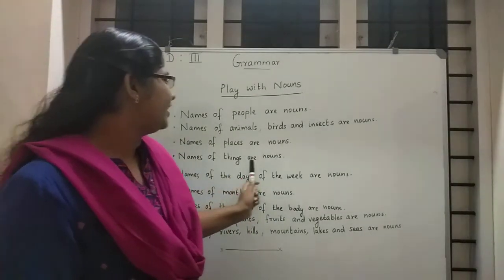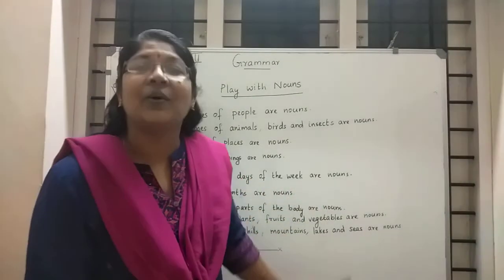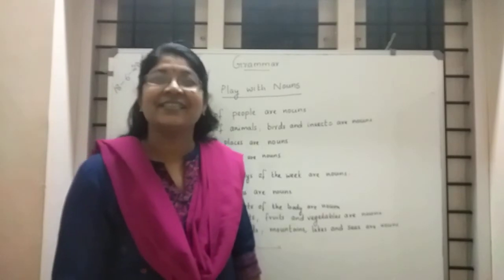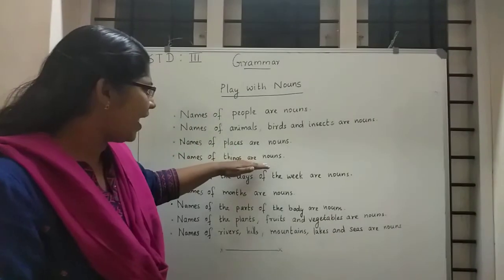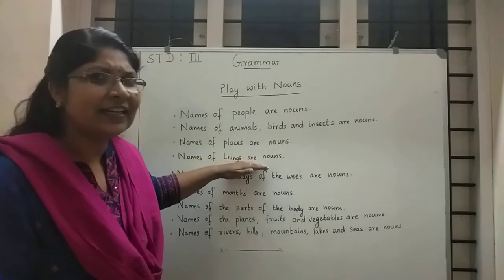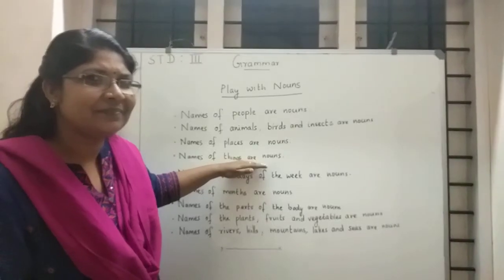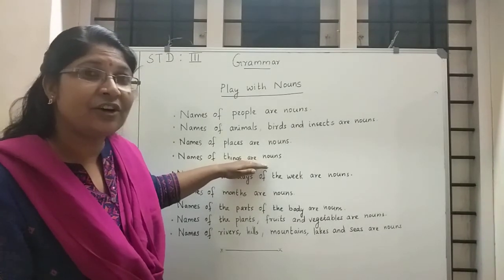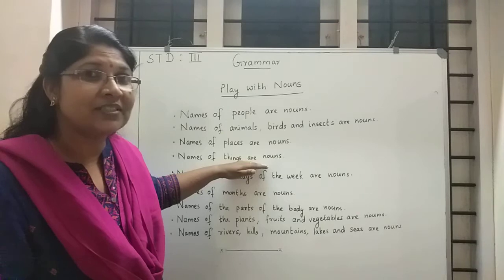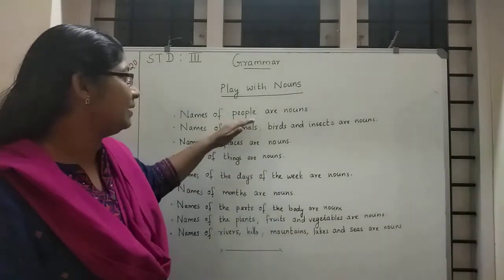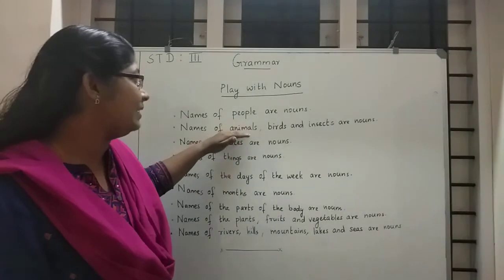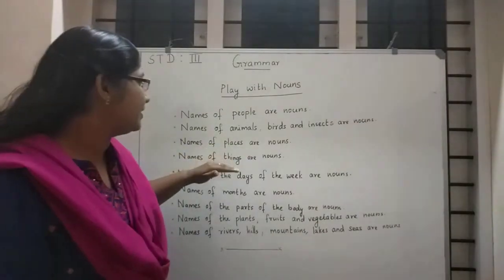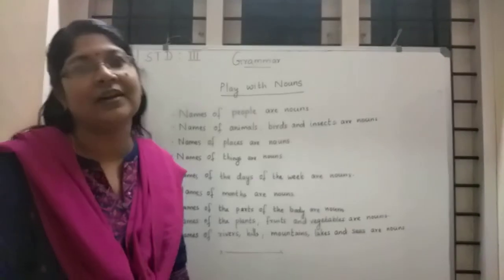Names of things are noun. This much you have studied earlier, right? When we say the definition of naming words — the names of people, animals, birds, insects, places, and things are noun.